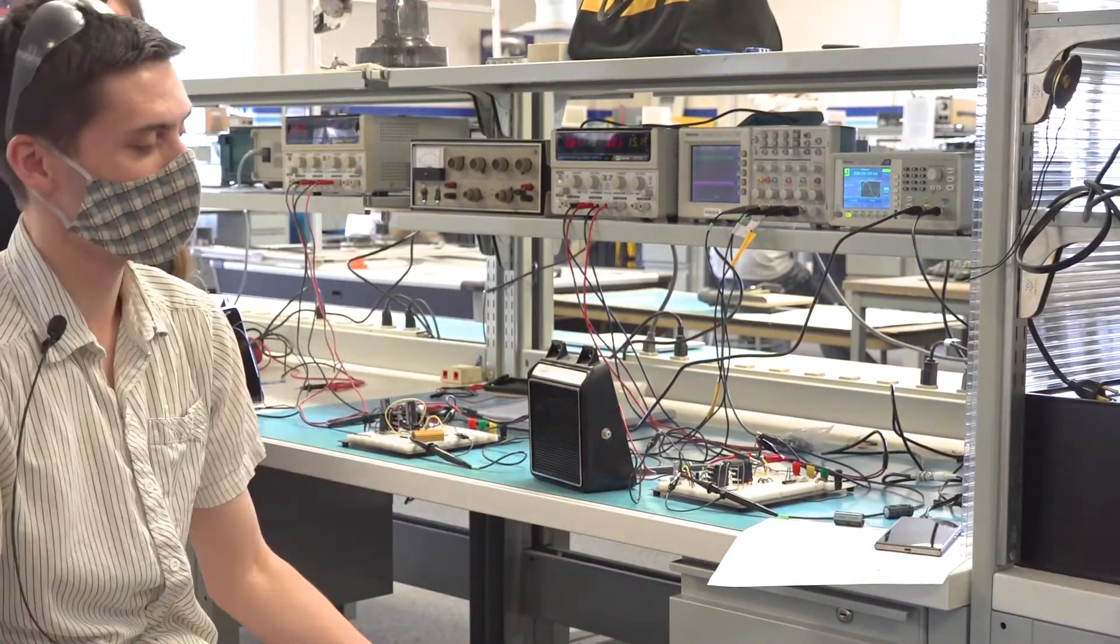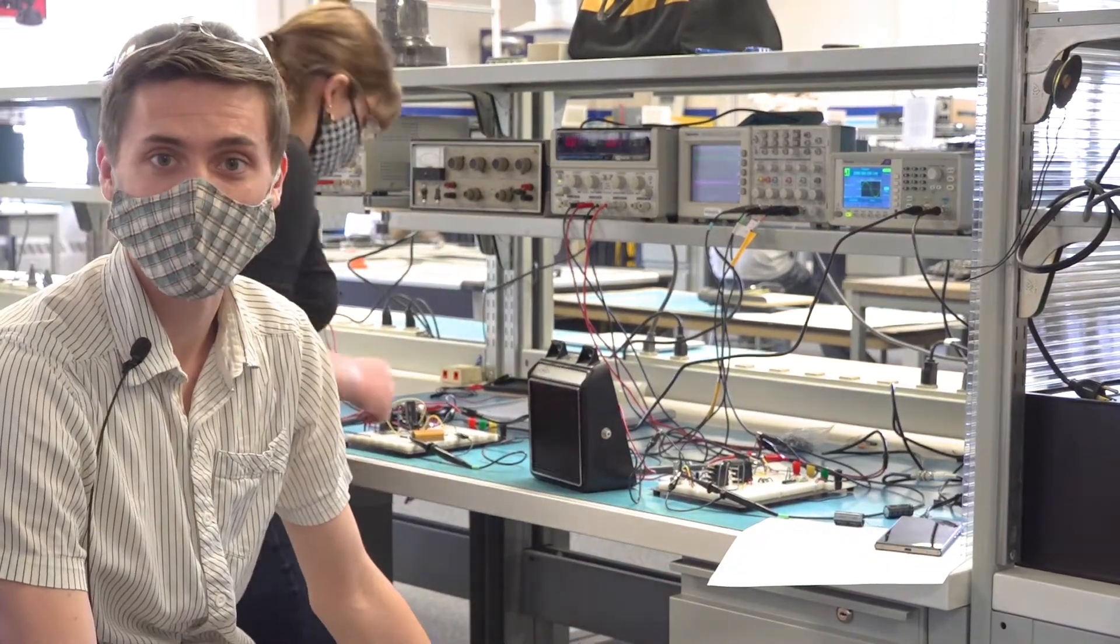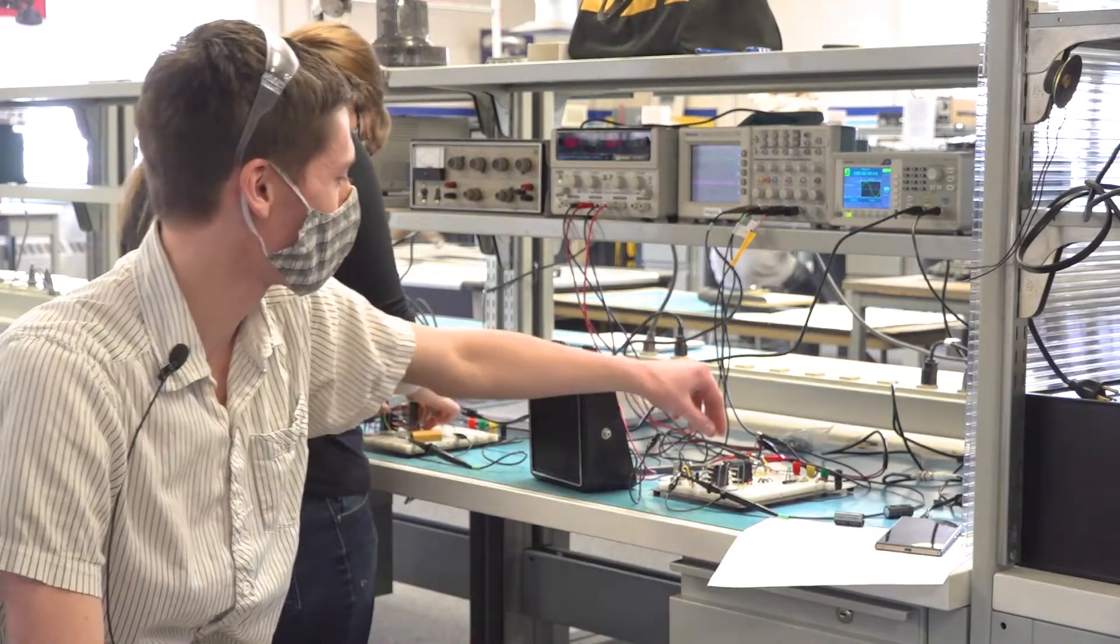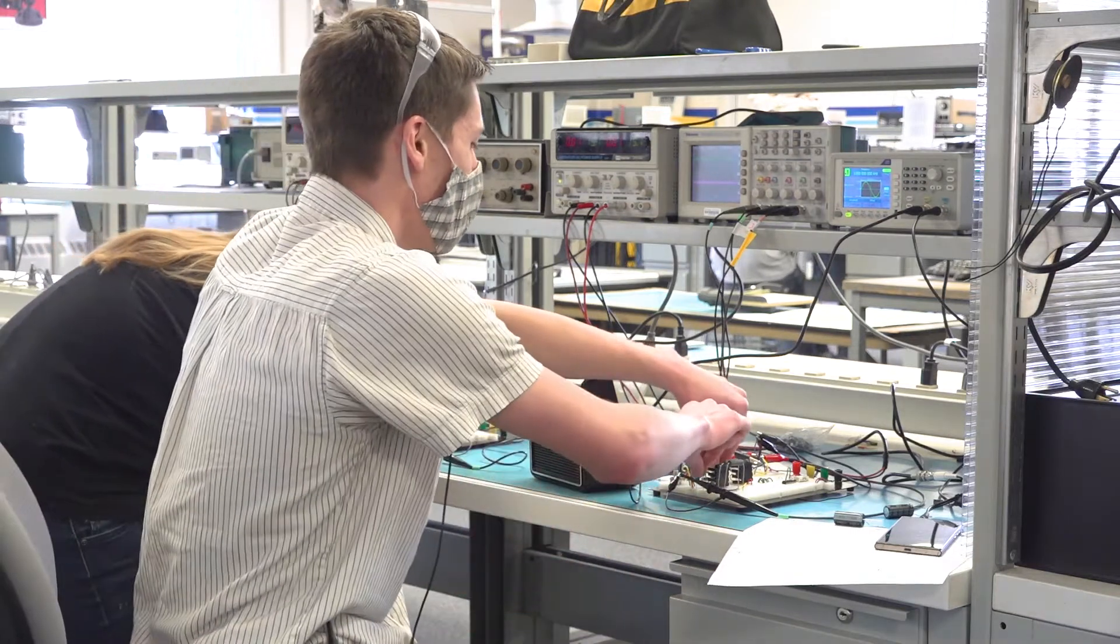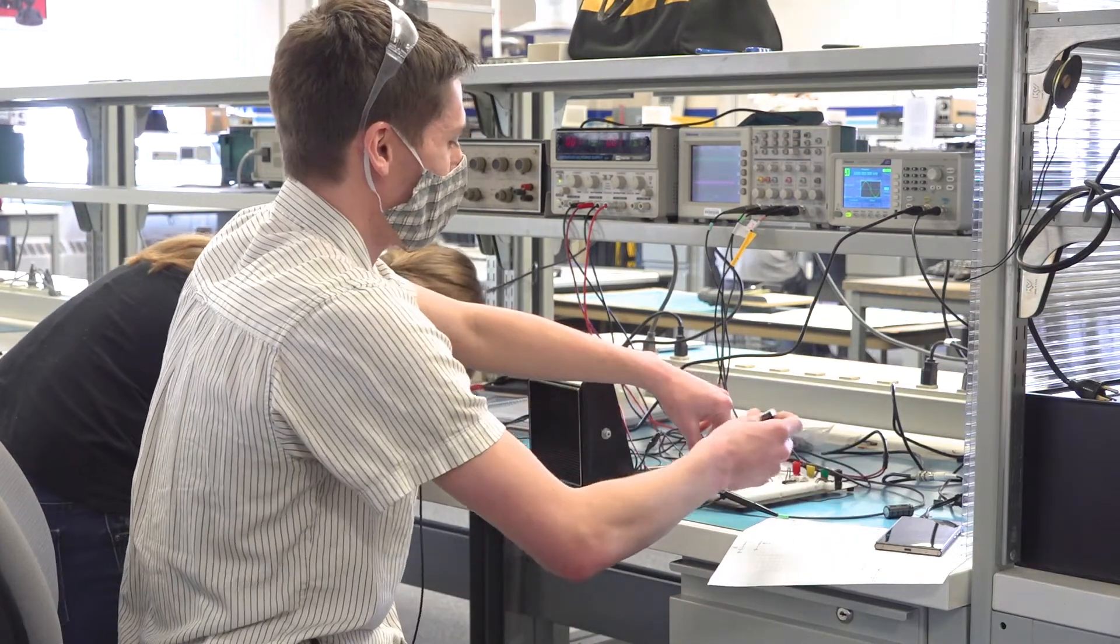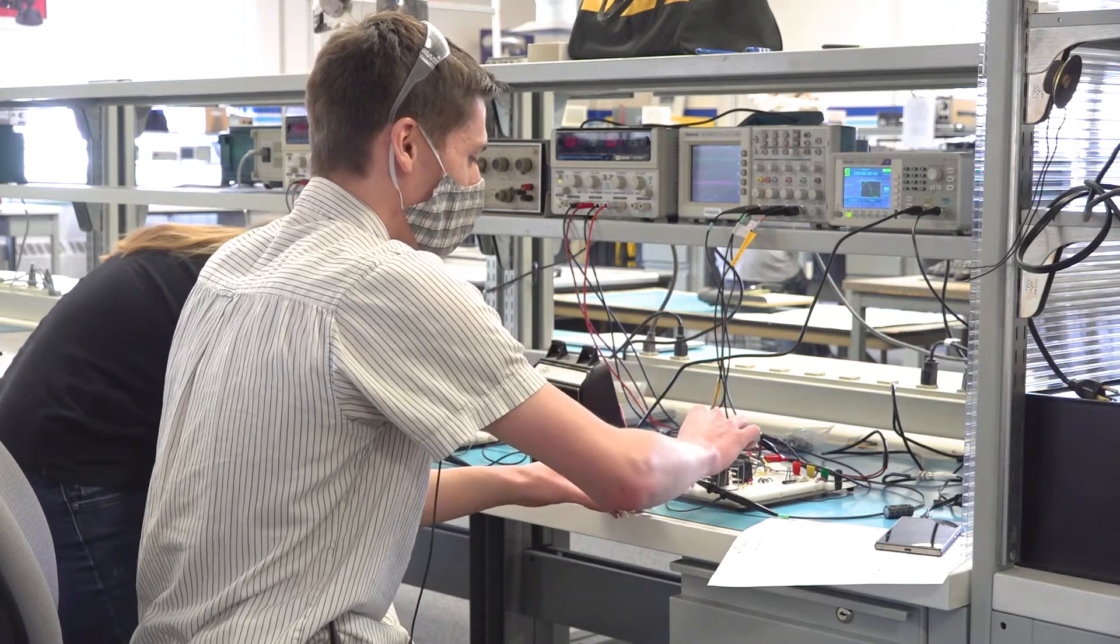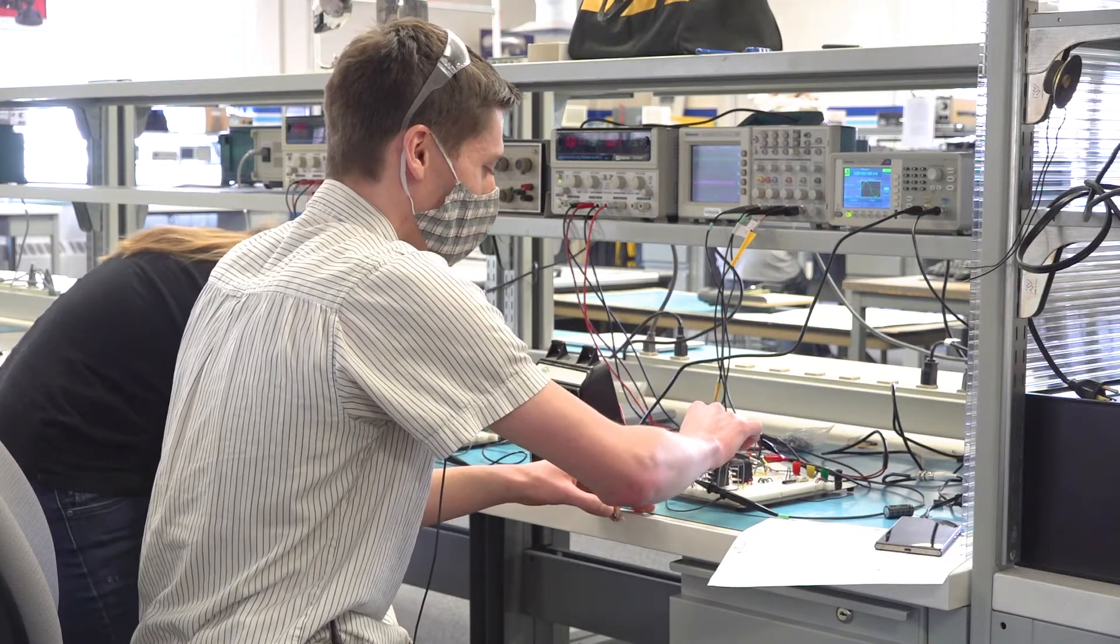Right now we've got it intentionally set up so that it's not the best quality, so we can learn about how the frequency range can affect things. These two components I'll swap out here are called capacitors. This will improve the range of sounds that this amplifier can pick up.